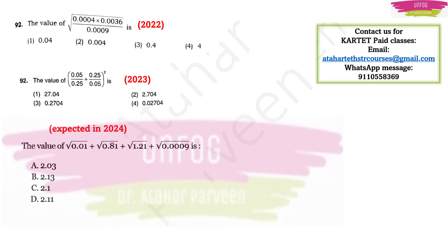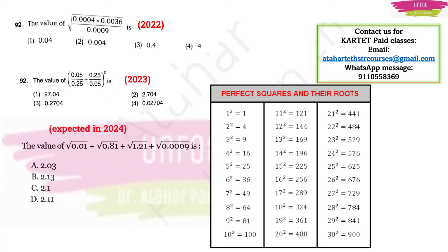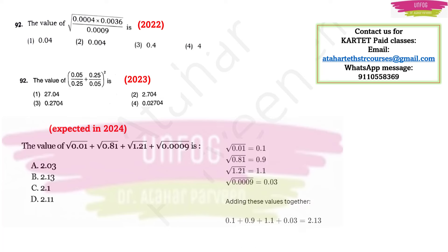They can ask this type of question: the value of square root of 0.01 plus square root of 0.81 plus square root of 1.21 plus square root of 0.0009. To answer this type of question you should be knowing the squares values and square root values. I would advise you all to learn square roots value from 1 to 25. Now here clearly square root of 0.01 is 0.1 because decimal point will shift in the right hand side if you remove the square root. Square root of 0.81 is 0.9, square root of 1.21 is 1.1.